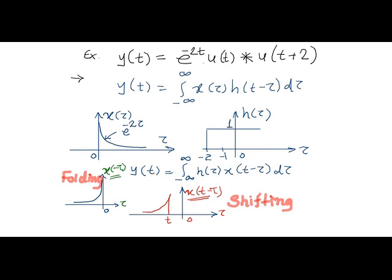x of tau as noted is a decaying exponential and h of tau is a unit step function which is coming two units in advance.